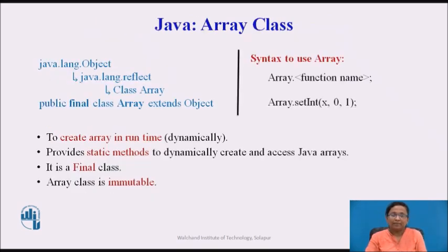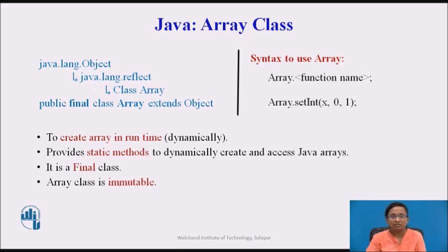Let's see the Array class in detail. The Array class is available in the java.lang.reflect package. It provides static methods to dynamically create and access Java arrays. It is a final class, which means it can't be instantiated or changed. Only the methods of this class can be used by the class name itself — as shown in the example, the methods can be called using the Array class name.